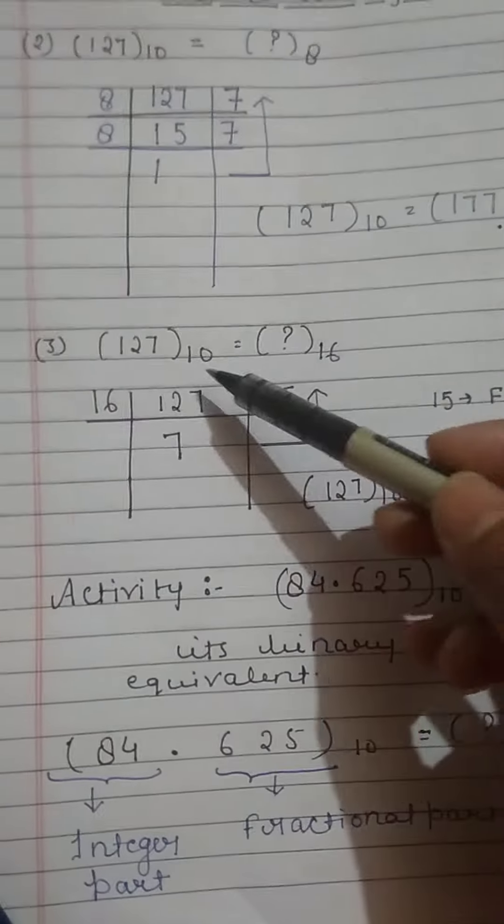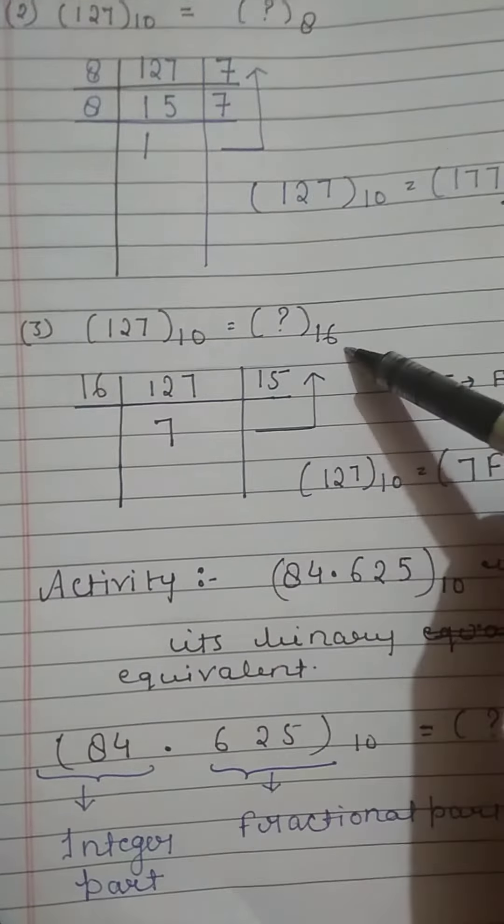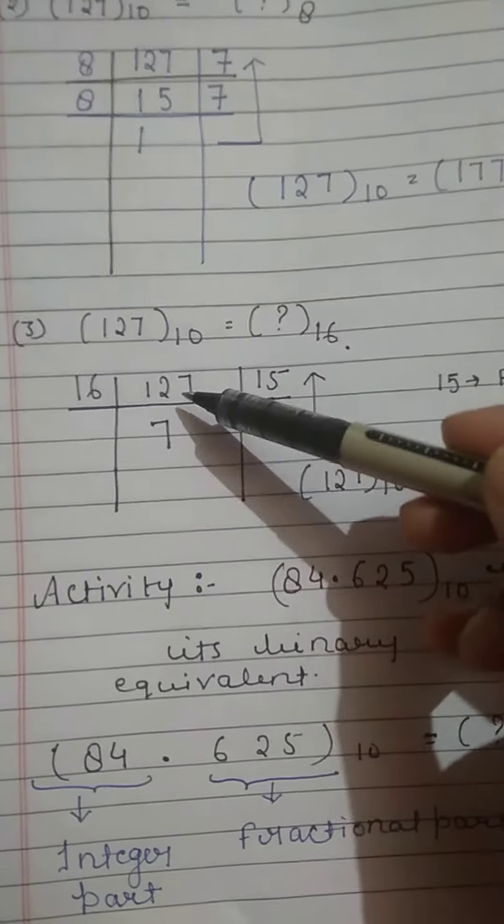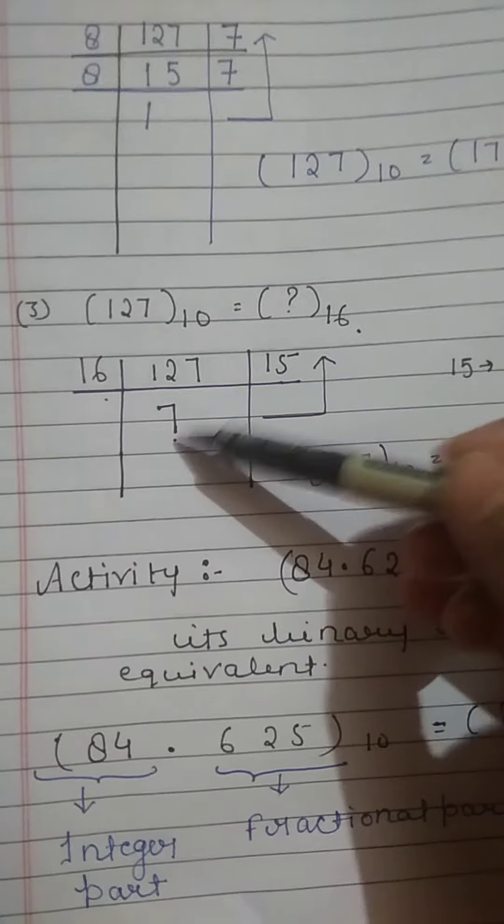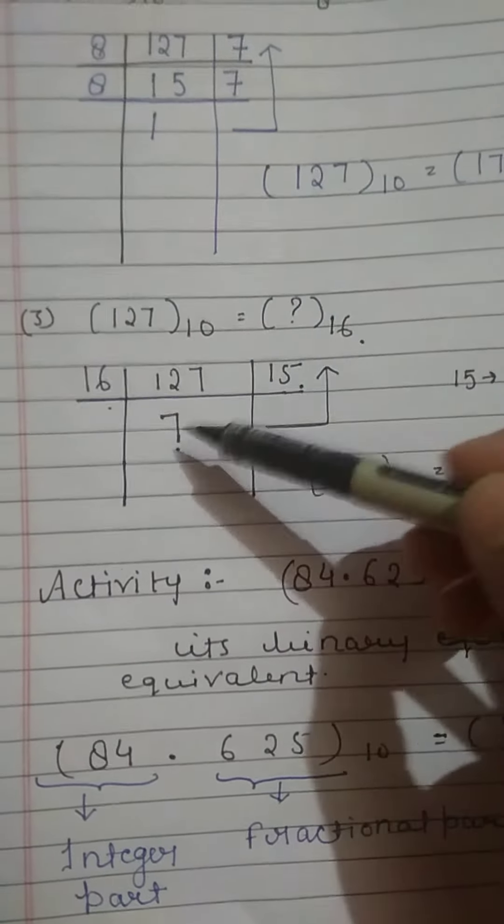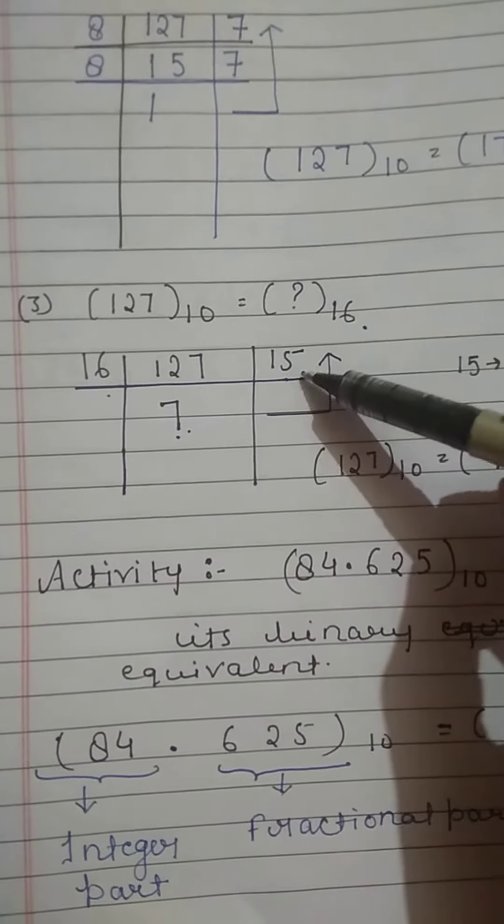In the same way we will convert 127 to hexadecimal. This number will be divided by 16. 16 goes 7 times. The quotient will be 7 and remainder will be 15.